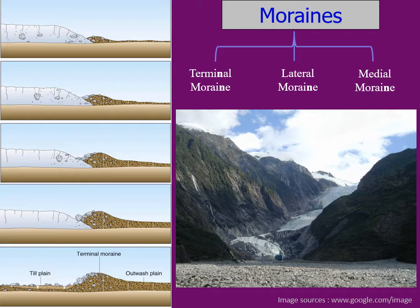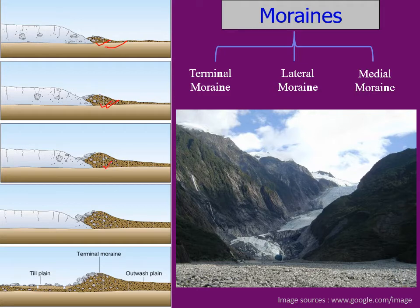Coming to glacial moraine: moraines indicate the farthest most limit of glacial activity. As you can see in this picture, here is a glacial ice mass, and at the frontal terminal part, ablation — that is melting of the ice mass — starts. All the debris are deposited and they form these kinds of ill-sorted mixtures which are called moraines.